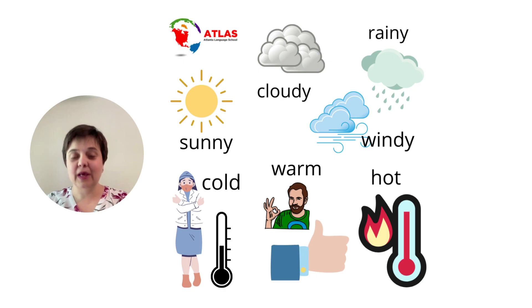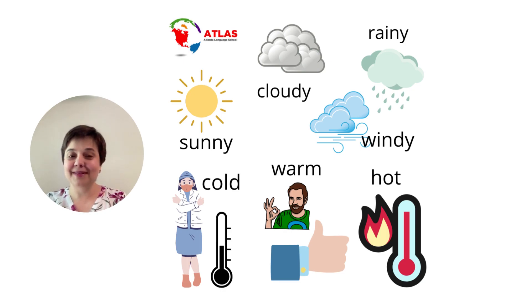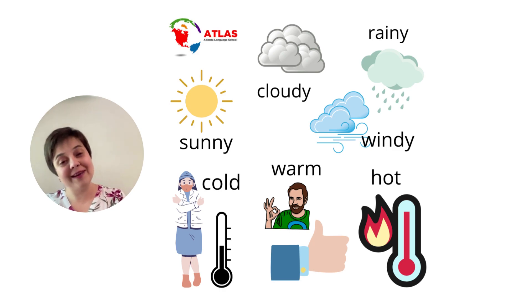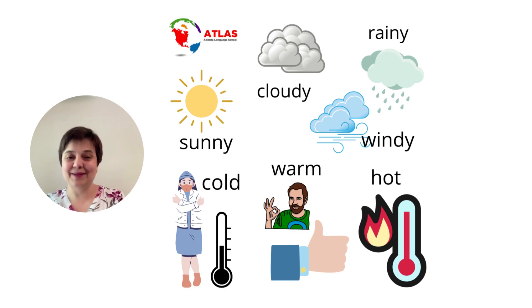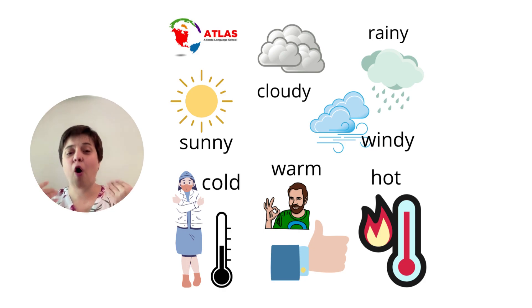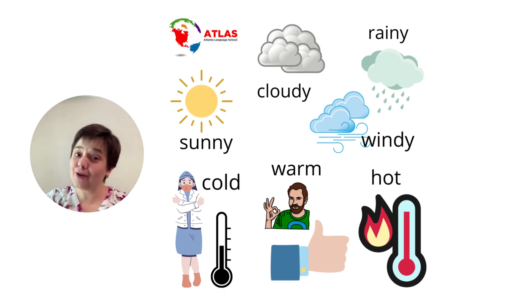Weather vocabulary: sunny - it's sunny; cloudy - it's cloudy; rainy - it's rainy; windy - it's windy; cold - it's cold; warm - it's warm; hot - it's hot.